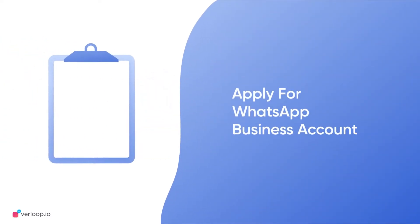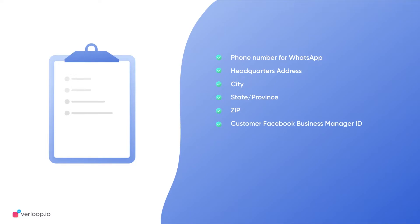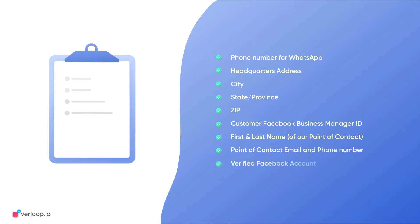To apply for a WhatsApp Business account, you will need to share the following company information with Verloop.io: phone number for WhatsApp, headquarters address, city, state or province, zip code, Facebook Business Manager ID, first and last name of the point of contact, email and phone number, verified Facebook account, and the business name to be associated with the number.